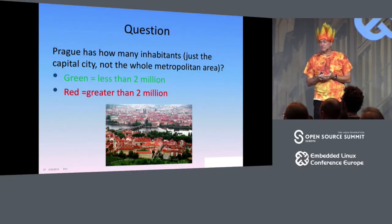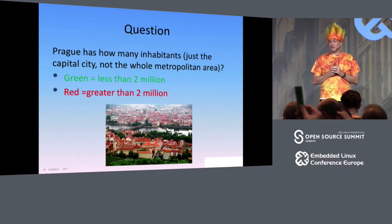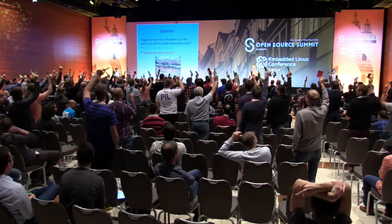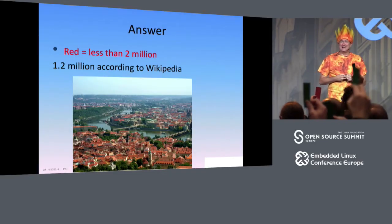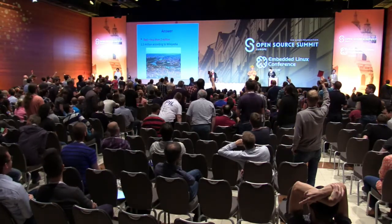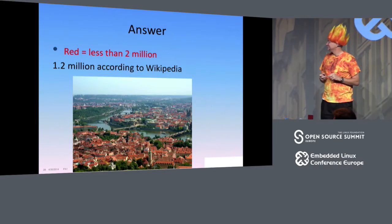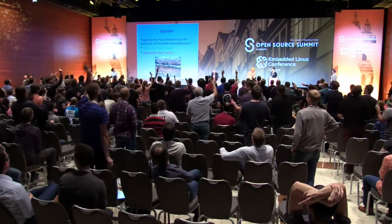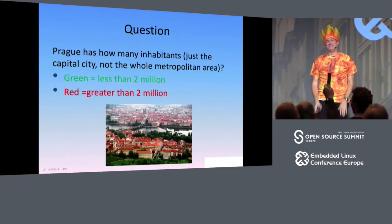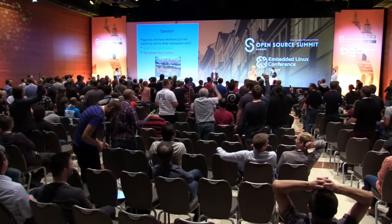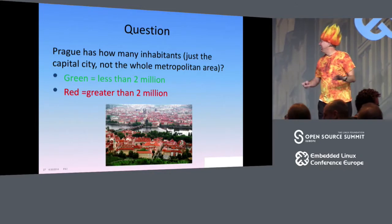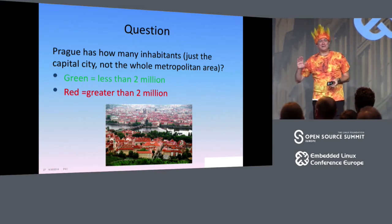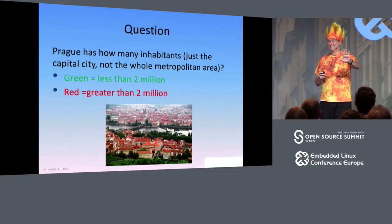Prague has how many inhabitants — just the capital city, not the whole metropolitan area. Is it less than 2 million or greater than 2 million? It's less than 2 million. In this case, the copying-your-neighbor thing worked to my advantage.